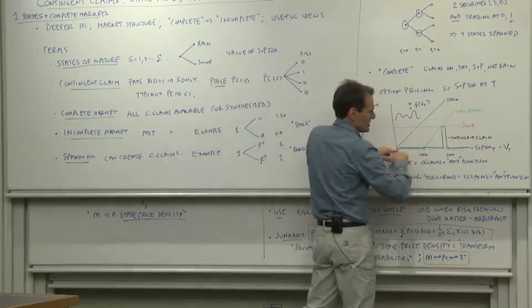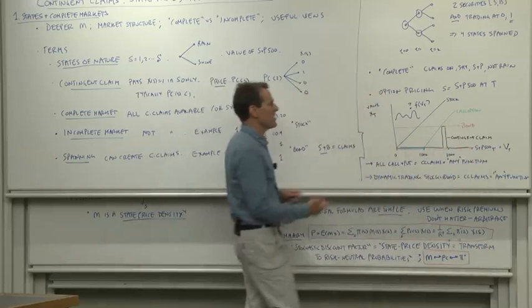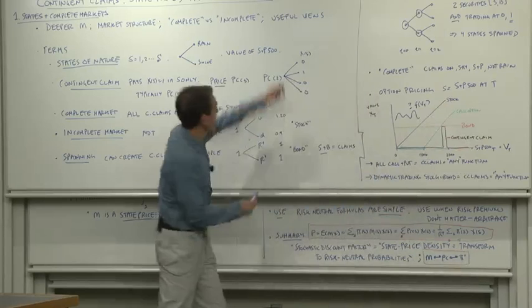We typically think here's on the x-axis is the value of the S&P 500 at capital T. And a bunch of different other payoffs can be given by the graphs of their value as a function of state. That's what we've done here too. Value is a function of state.